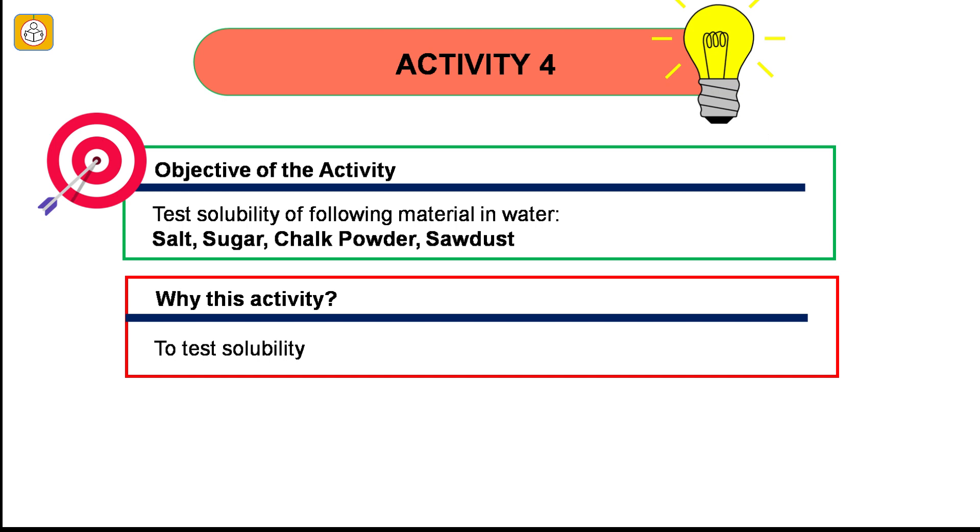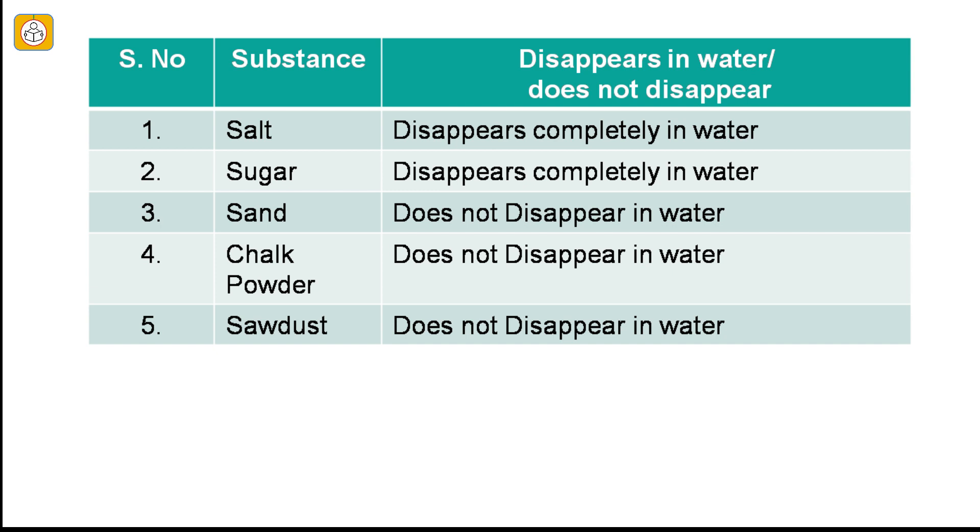Activity number 4: Test solubility of following material in water. Salt, sugar, chalk powder, sawdust. We see that salt and sugar are soluble in water whereas sand, chalk powder and sawdust are not soluble in water.